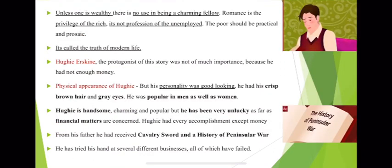The story starts: 'Unless one is wealthy, there is no use in being a charming fellow. Romance is the privilege of the rich; it is not the profession of the unemployed. The poor should be practical and prosaic.' Oscar Wilde wants to tell us here that a poor person, though charming, may not enjoy his life, will not have the privilege of romance, and if he is unemployed, he will have little importance. These poor people should be very practical and ordinary in their life.